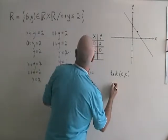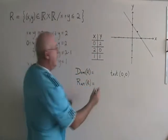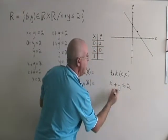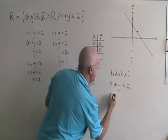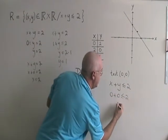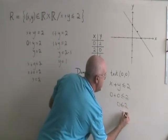I write my equation with the original inequality symbol, and then I replace x and y with the 0 and the 0 from the test point. This simplifies to give 0 less than or equal to 2, which is true.